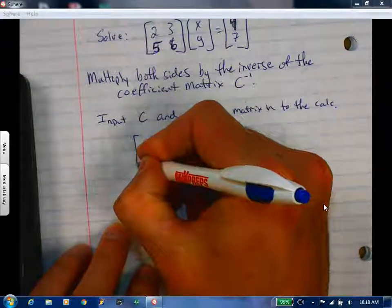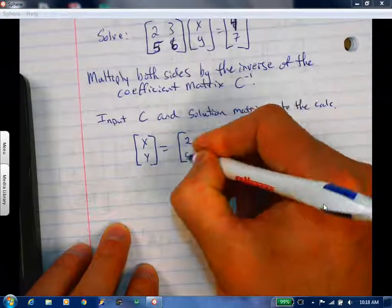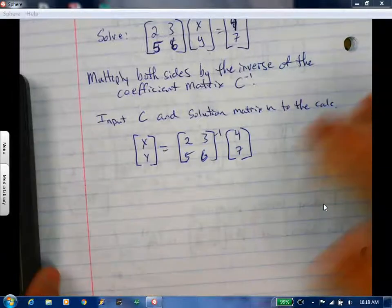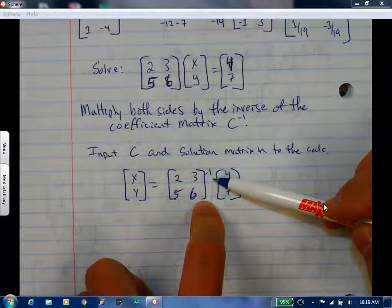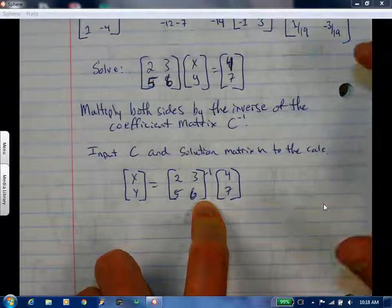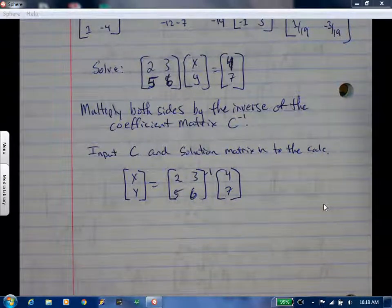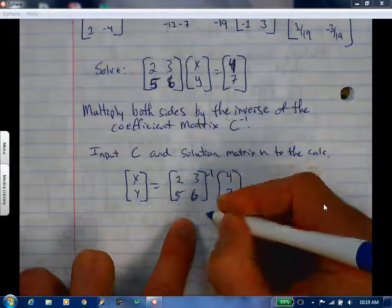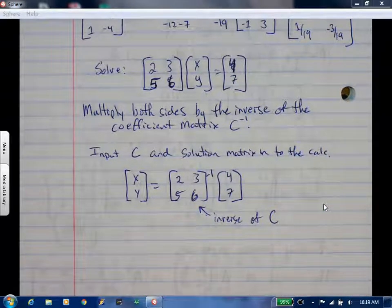So here's what we have to do. X times Y is going to equal the inverse of [2, 3; 5, 6]. The calculator is going to find that for us. Times [4; 7]. So you see how I moved this to the other side. So instead of dividing by a matrix, you have to multiply by the inverse. When I moved this to the other side, it has to be an inverse now. So that is the inverse of C, inverse of our coefficient matrix. C is representing our coefficient matrix.